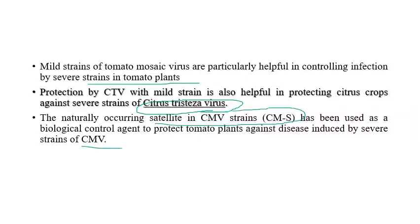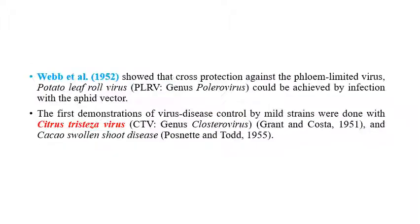The satellite CMV is used as a biological control agent to prevent severe strains of cucumber mosaic virus. Webb in 1952 showed that cross protection against phloem-limited viruses such as potato leaf roll virus could be achieved by infection with the aphid vector — mild strains transmitted by aphids provide protection so that subsequent severe strain inoculation causes little disease damage.